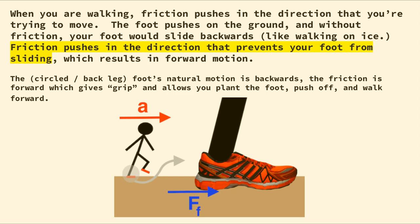Your body's motion is different from your foot's motion — the foot is going back and friction goes in the opposite direction of the foot. The foot is the only thing making contact with the road. Friction pushes in the direction that prevents your foot from sliding. If you've ever walked on ice, your foot slips everywhere — that's a prime example of how friction enables our day-to-day life. Friction still opposes the direction of motion; it's the feet going back, and friction opposes that.